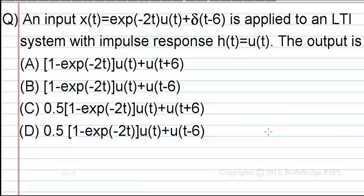The input x(t) = e^(-2t)·u(t) + δ(t-6) is applied to an LTI system with impulse response h(t) = u(t). The output is to be determined. The first option is [1 - e^(-2t)]·u(t) + u(t+6), and the second option is [1 - e^(-2t)]·u(t) + u(t-6).